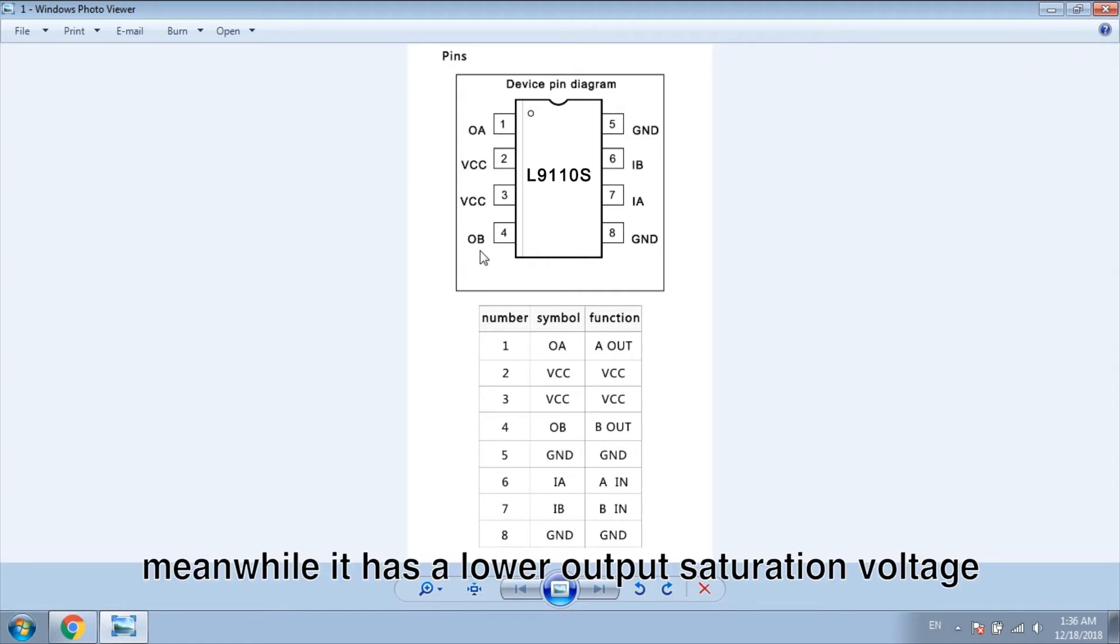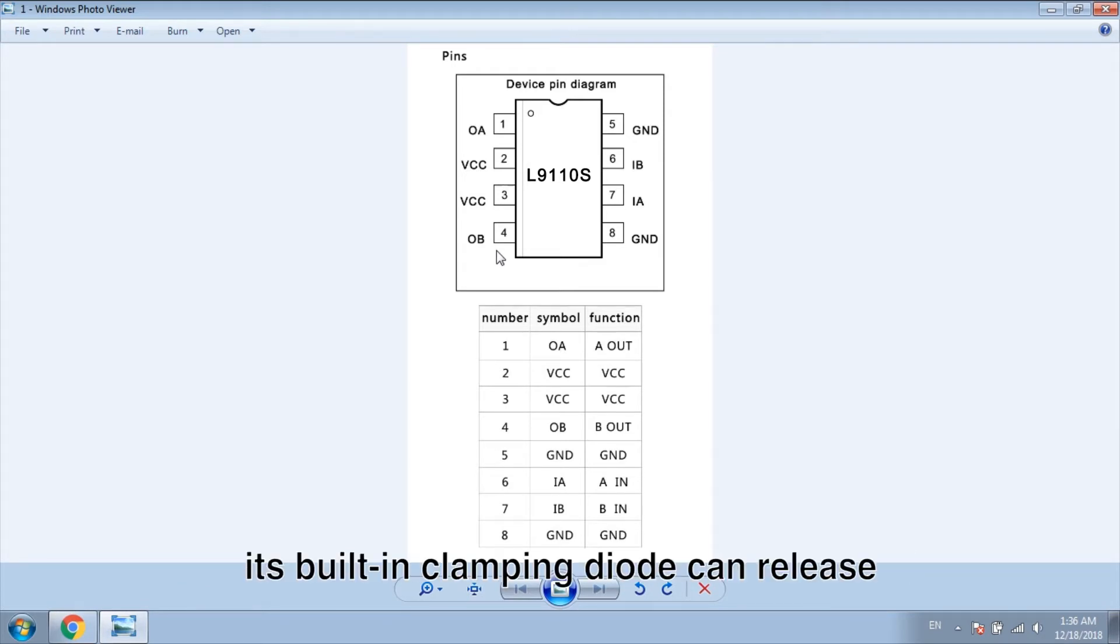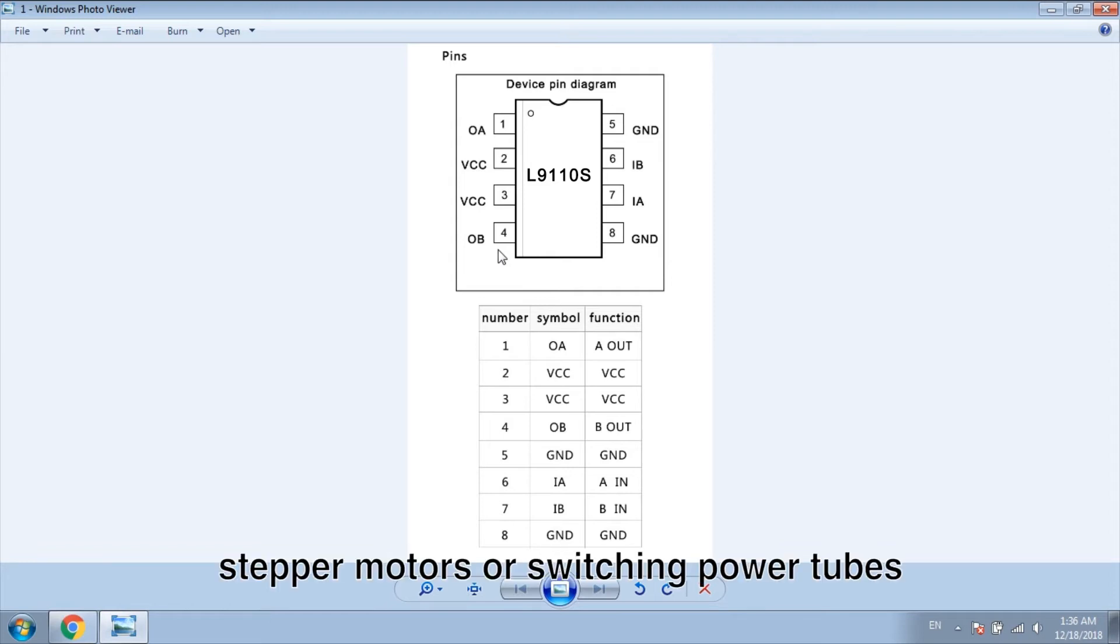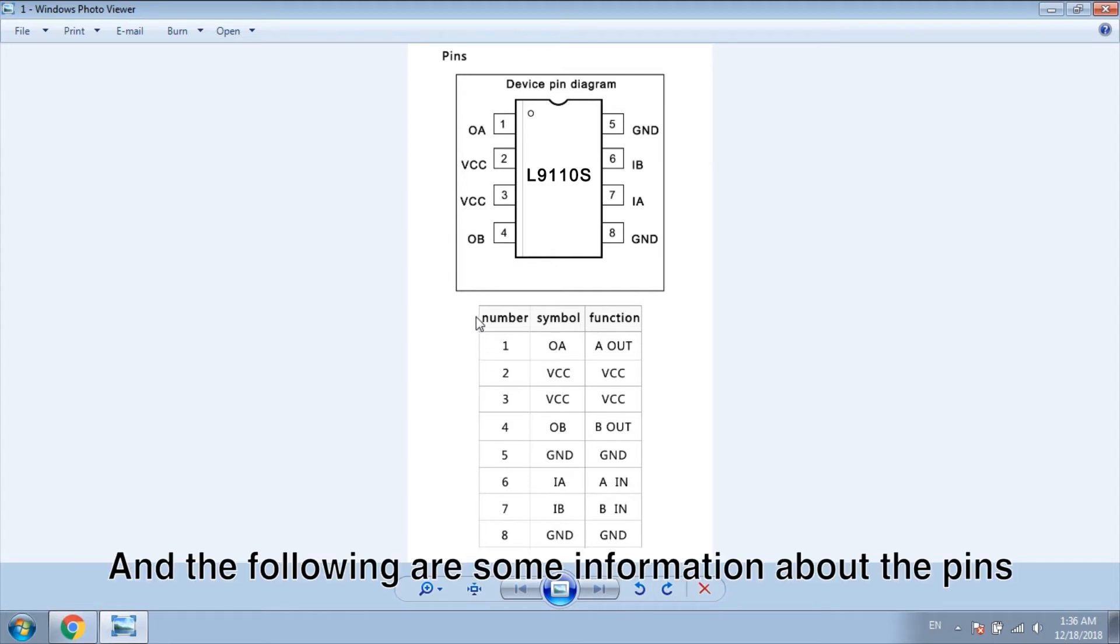Meanwhile, it has a lower output saturation voltage and quiescent current. Its built-in clamping diode can release the inrush current of the inductive load, making it safe and reliable in driving the relay, DC motors, stepper motors, or switching power tubes. And the following are some information about the pins.